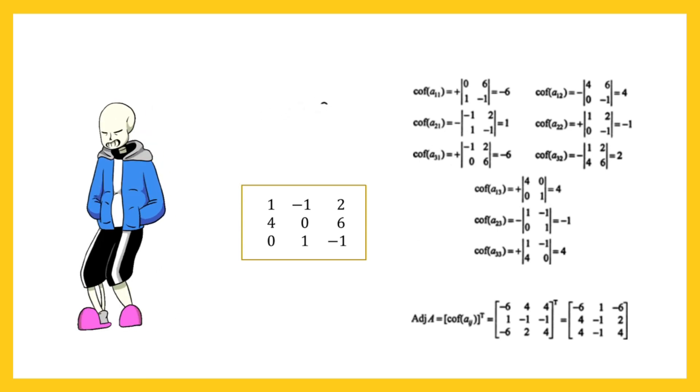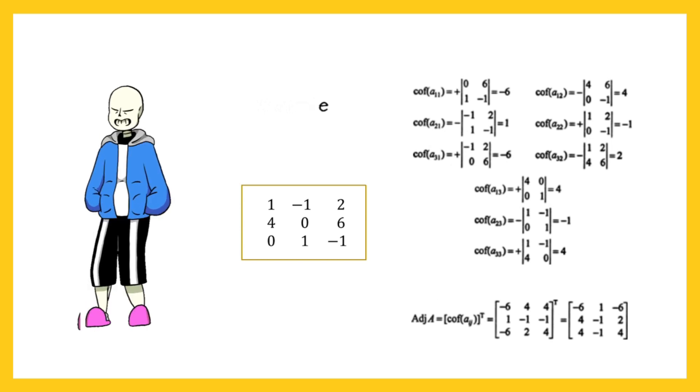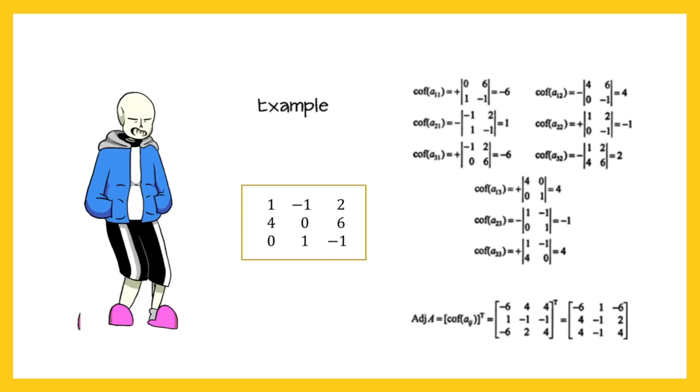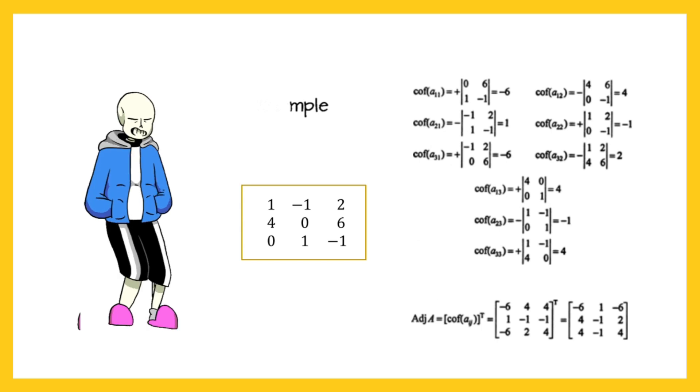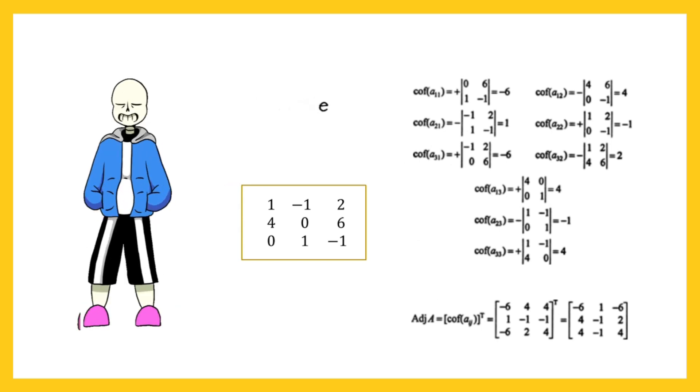Solution: First we will evaluate the cofactor of every element, then we will transpose that matrix to find the adjoint of the matrix. As shown in the figure, this is how we will find the cofactor of every element and then the adjoint.